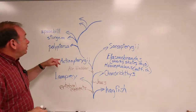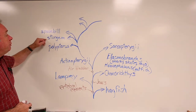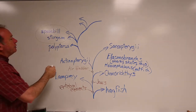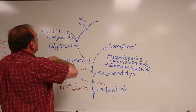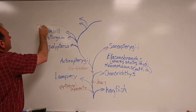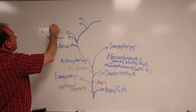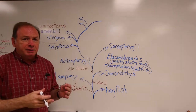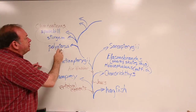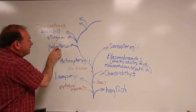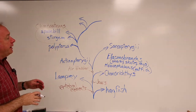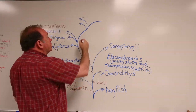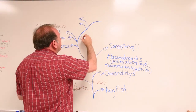The sturgeon and spoonbill together are referred to as chondrosteans — 'chondro' meaning cartilage, 'ostean' referring to bone — because their skeleton is largely cartilage with a little bit of bone. Polypterus is sometimes lumped into that group, but its skeleton is more bony, so it's not a great fit. These are considered older fish, and everything else above them is called a neopterygian — the new fish types.